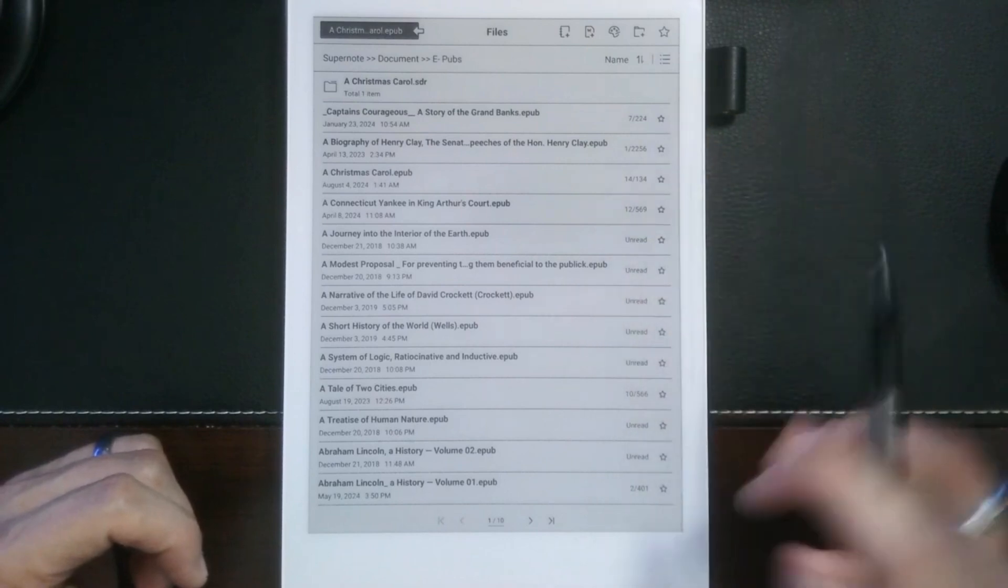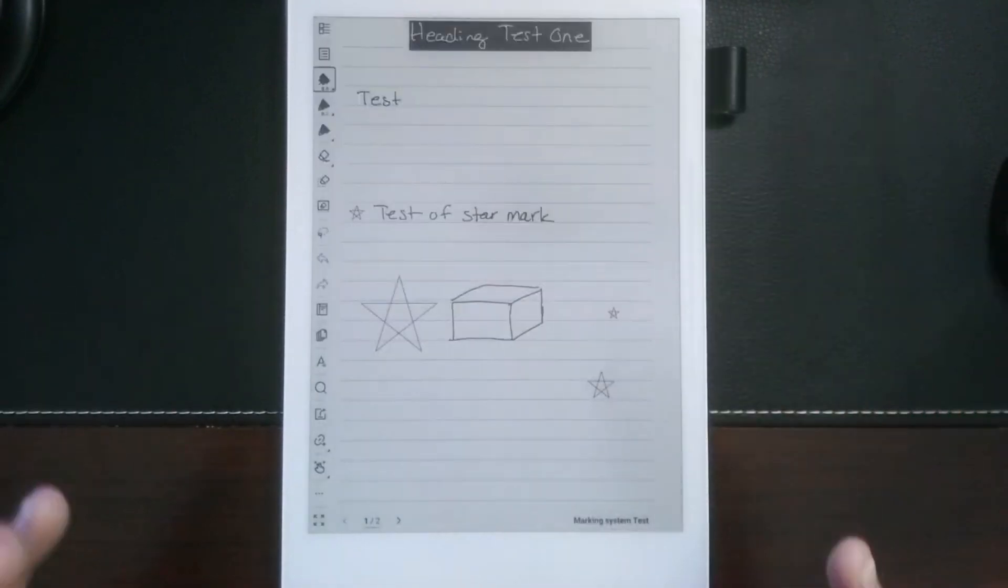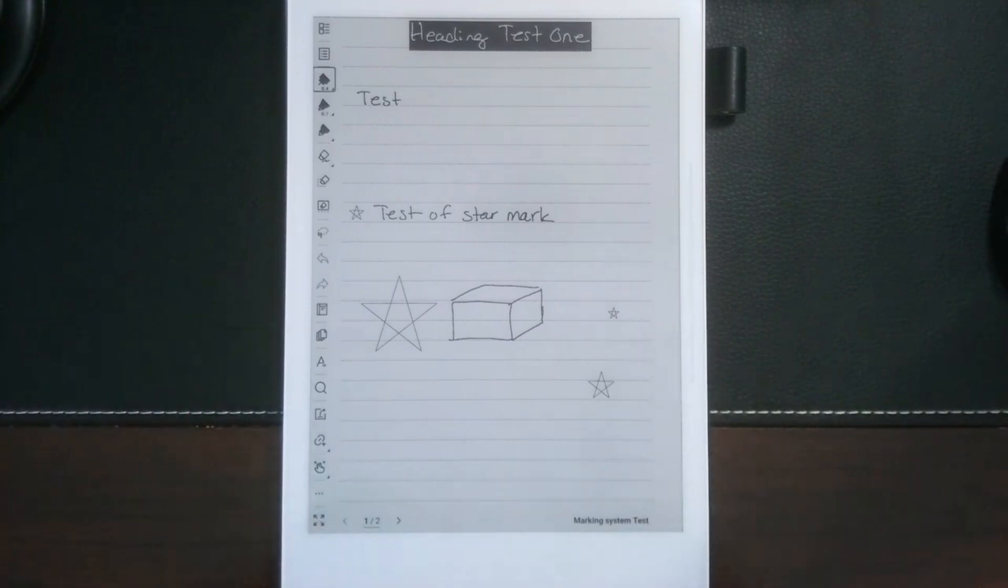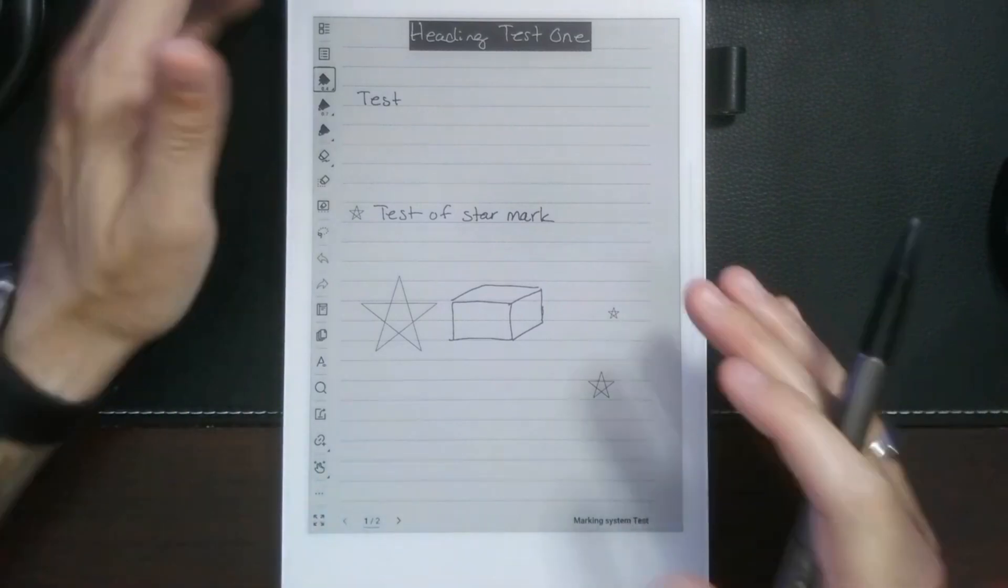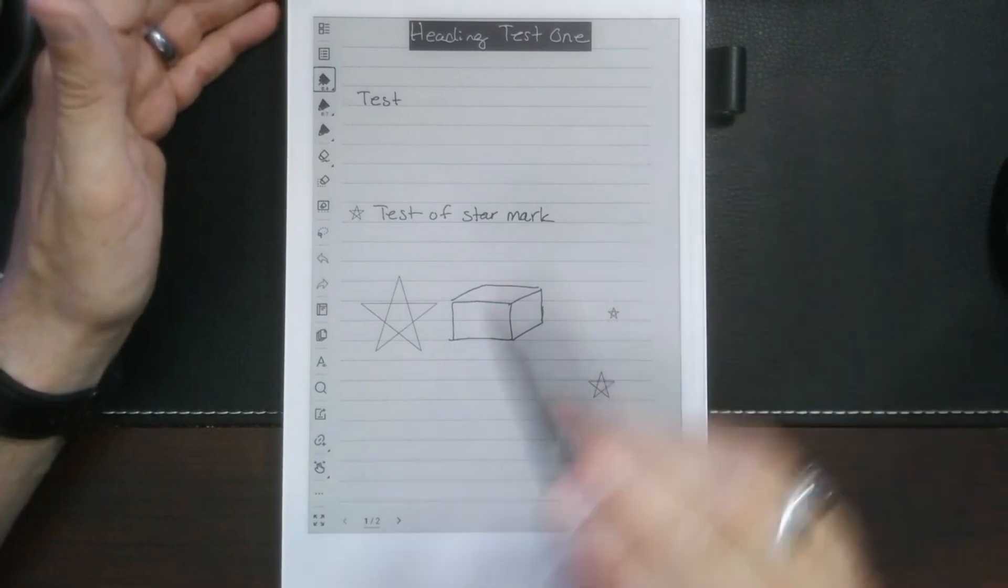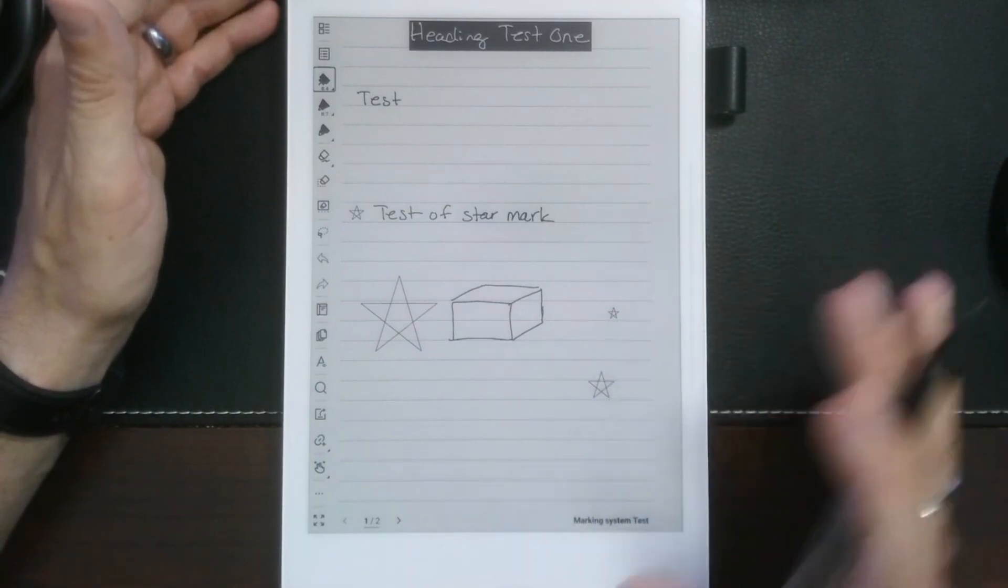There's also this idea of being able to just in real time recognize the text in the background and then make that globally searchable throughout. Now there's a couple of different ways you can do this. This does not happen in the PDFs, so don't think that when you're writing in a PDF that it's going to be searchable natively.